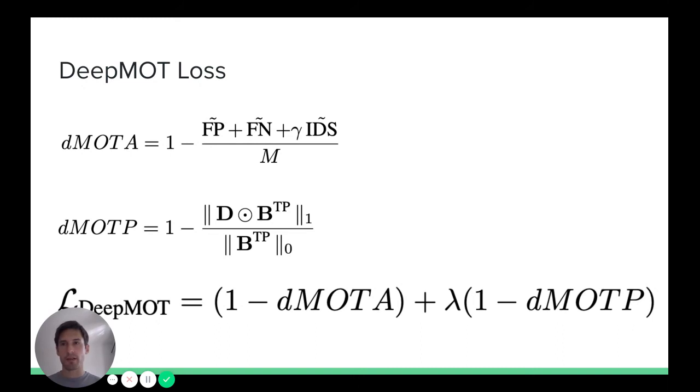Putting everything together, differentiable MOTA is then very similar to MOTA. We just replace false positives, false negatives and ID switch counts with their soft differentiable variants that we just discussed. In addition, we have here a weighting factor that allows us to incur higher penalties on number of ID switches. Differentiable MOTP is expressed as a norm of flat matrix obtained by multiplying true positive masks with a distance matrix divided by number of positives.